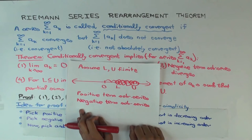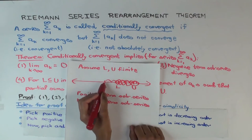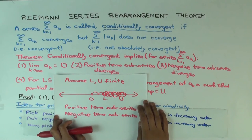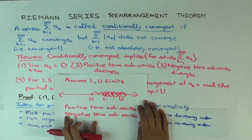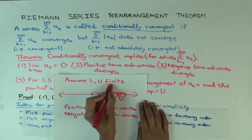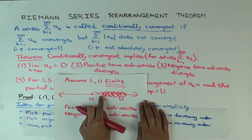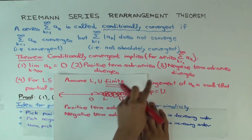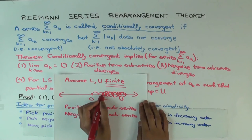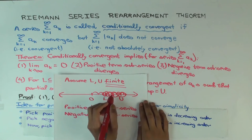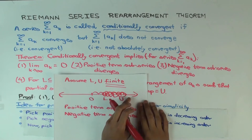Why are we guaranteed we can always cross U? Because the positive term subseries diverges — its overall sum is infinity — so you can definitely cross any finite point. Similarly, you can cross L using the negative term subseries, which also diverges. Once you're to the left of L and want to go back right, you've only taken a finite number of positive terms; infinitely many remain, so you can definitely cross U again.